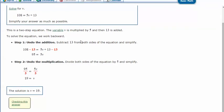Then we have to undo the multiplication. 5v is 5 times v, so the opposite, or the way to undo it, is to divide both sides by 5. 5 divided by 5 is 1v, or just v. 95 divided by 5 is 19. So our answer is v equals 19. And 5 times 19 plus 13 is 108.